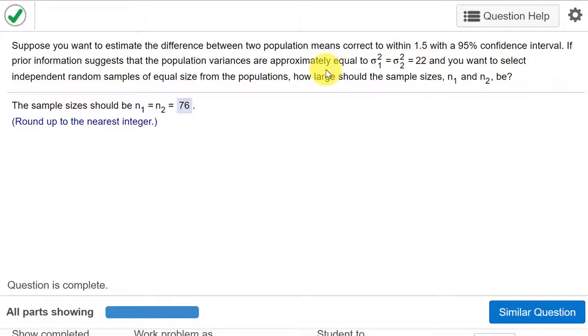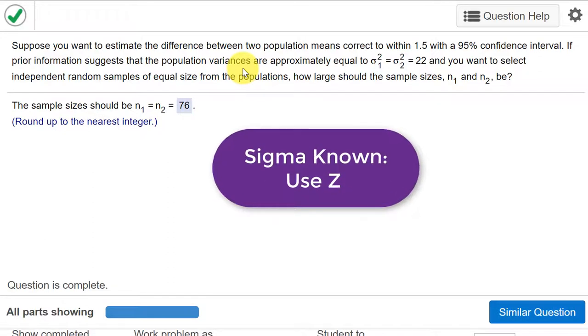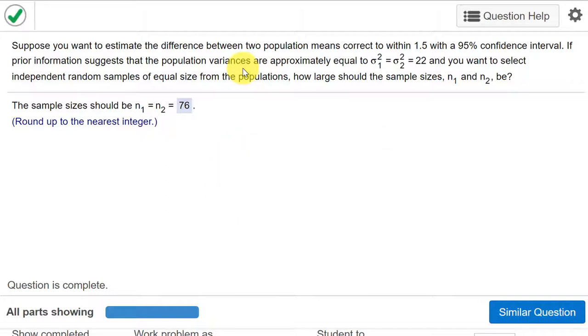The second thing we're given is that the variances, the population variances, are approximately equal to 22. So since we're given the population variances, that means we know the population standard deviations, which means we use the normal distribution, the z distribution, in order to solve this, not the t distribution.